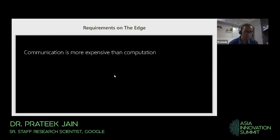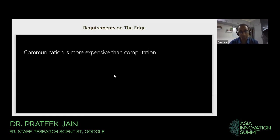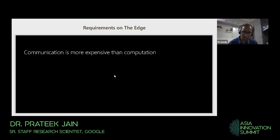Why do we really care about these devices? Why do we want to enable machine learning on them? Can't we just take all the data generated by sensors and use these devices as dumb gateway devices sending all the data to a more powerful gateway or to the cloud? That's a reasonable approach in a variety of settings, but in a lot of settings it might not work out. The overriding principle is that in these devices, communication can be much more expensive than computation.